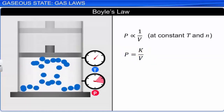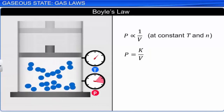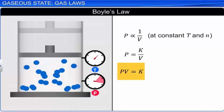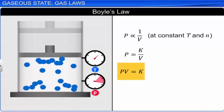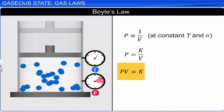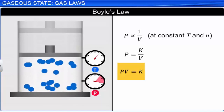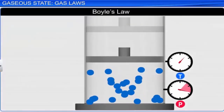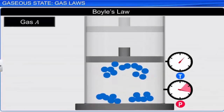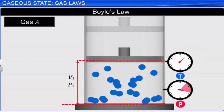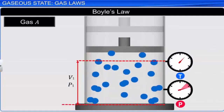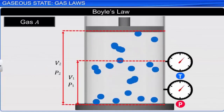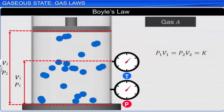On rearranging the equation we get PV is equal to K, or in other words, at constant temperature, the product of pressure and volume of a fixed amount of gas is constant. For example, if N moles of gas A occupying volume V1 at pressure P1 expands to volume V2 and pressure P2 at constant temperature, then P1V1 is equal to P2V2, which is constant.